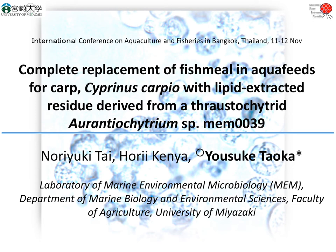Why do we need to prepare aquaculture feed using microbial cells? I'd like to introduce my research results including the background. The title is: 'Complete replacement of fish meal in aqua feeds for carp with lipid extracted residue derived from thraustochytrid Aurantiochytrium, strain MEM-0039.' Aurantiochytrium is one genus of thraustochytrids.